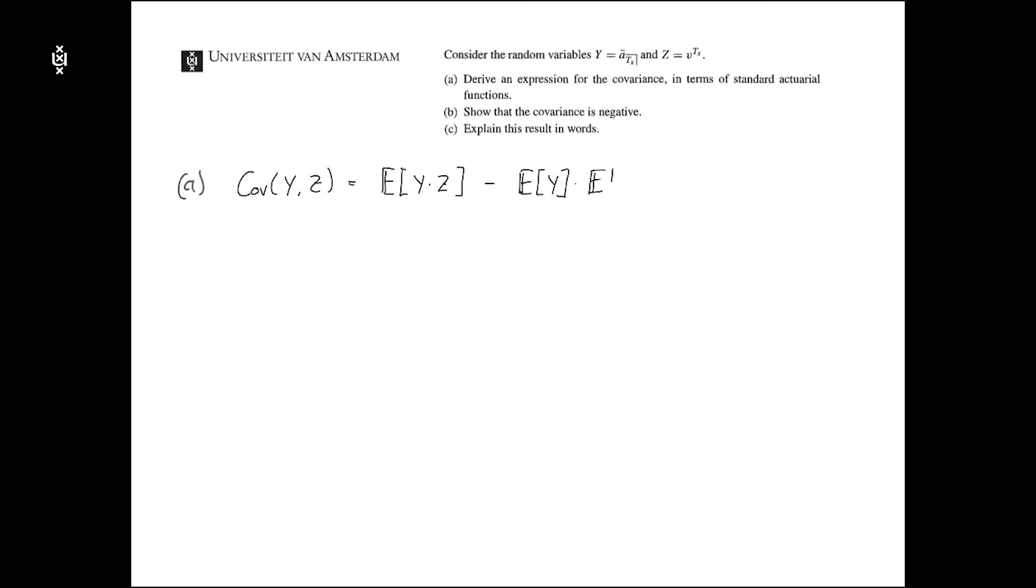We have this expression. And if we now substitute the definitions of y and z, then we have that y is equal to a bar tx times z equal to v to the power tx. So this a bar represents the annuities for a whole life of insurance up to the time of death, and v was the discount factor.